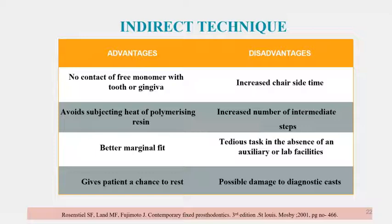The advantages of the indirect technique include: no contact of free monomer with tooth or gingiva, avoidance of subjecting tissue to heat from the polymerizing resin, better marginal fit, and giving the patient a chance to rest. The disadvantages are increased chair-side time and an increased number of intermediate steps.